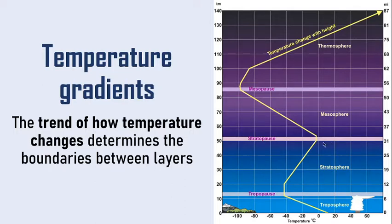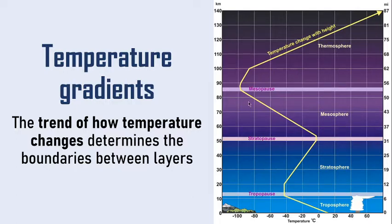Between layers we have pause layers, where the temperature generally doesn't change as you go higher or away from Earth's surface. In the lowest layer the temperature becomes colder as you go up, then in the next layer it becomes hotter as you go up — and it changes: colder, hotter, colder, hotter — and that's what makes them different layers of the atmosphere.